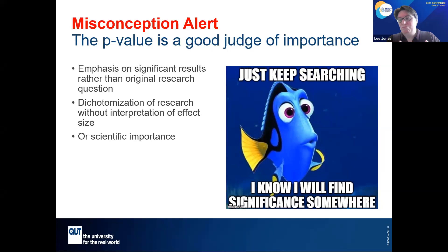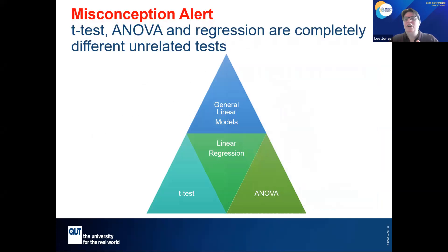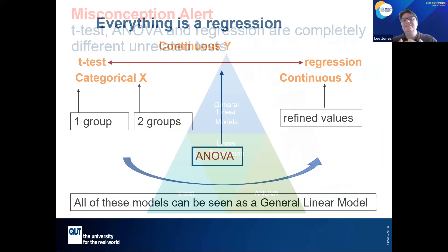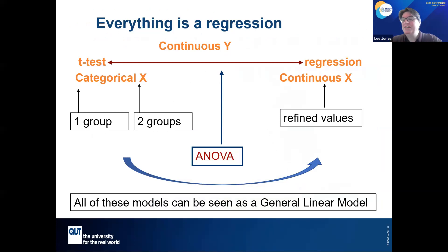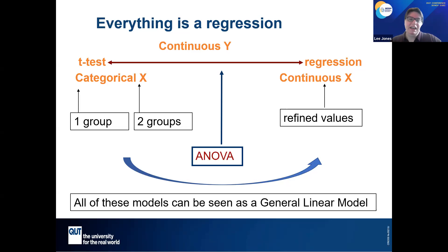By far the most important misconception I'll discuss is the idea that t-tests, ANOVA, and regression are completely unrelated tests. We need to start teaching that everything is a regression. With logistic regression we don't split it up, but with linear regression we say 'when the independent variable is categorical, do this; when it's continuous, do that.' There are 50 different named tests — one-group t-test, two-group t-test, one-way ANOVA, factorial ANOVA, ANCOVA — but they all relate to a general linear model, which can be seen as a unifying framework.